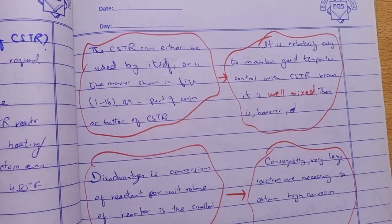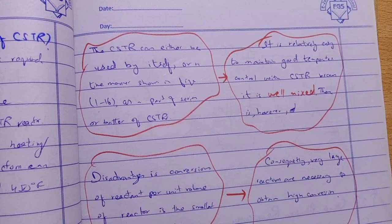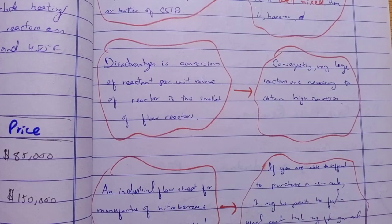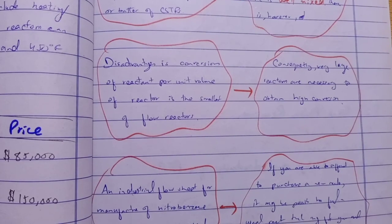The CSTR can either be used by itself or in series as shown in the figure. It is relatively easy to maintain good temperature control — always remember this for interviews. The CSTR maintains good temperature control because it is well mixed. The disadvantage of the CSTR is that the conversion of reactant per unit volume of reactor is the smallest of all flow reactors.